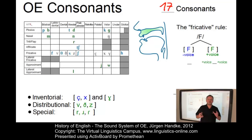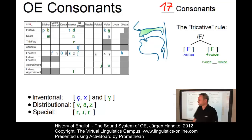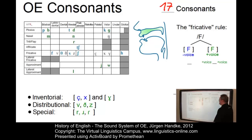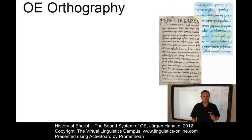Further differences between present-day English and Old English concern the use of the velar nasal and the allophonic realization of K. Having talked about the phonemic system, let's now talk about the orthography of Old English.